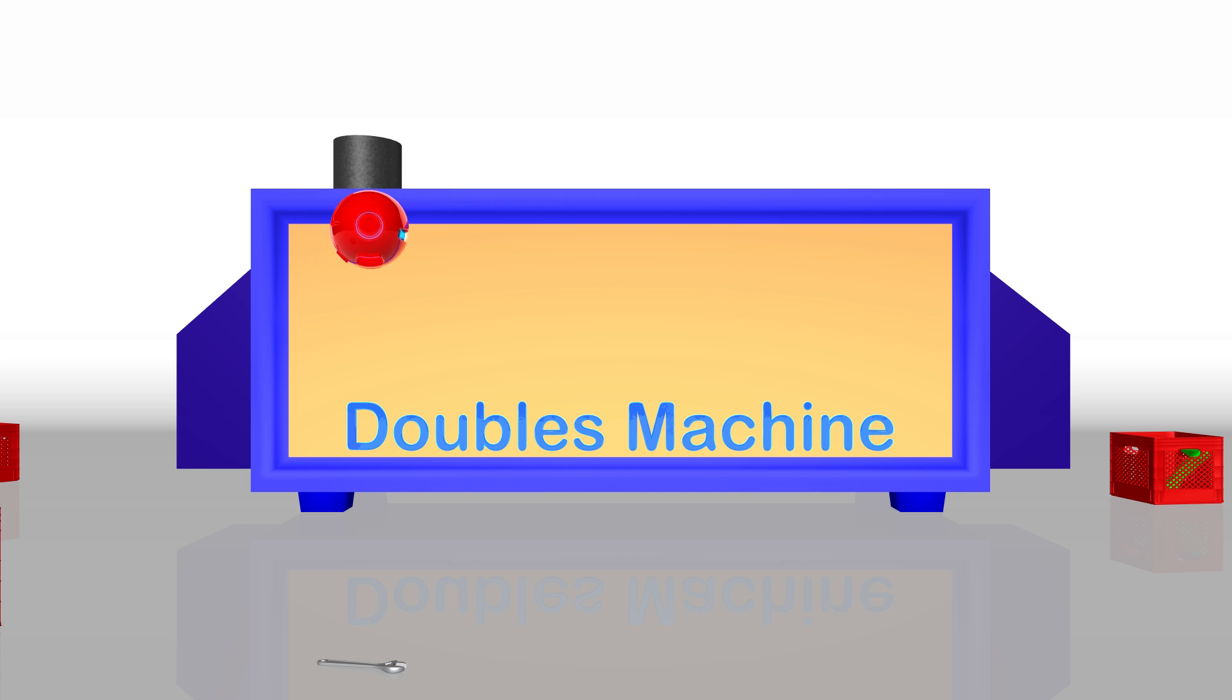This is the doubles addition machine, and it is supposed to take a number and double it by adding. For example, here is the number 1, and to double the number 1 we add another number 1. Now we have 1 plus 1, which gives us what? 2! The answer is 2. We just used addition to double the number 1 and got the answer of 2.